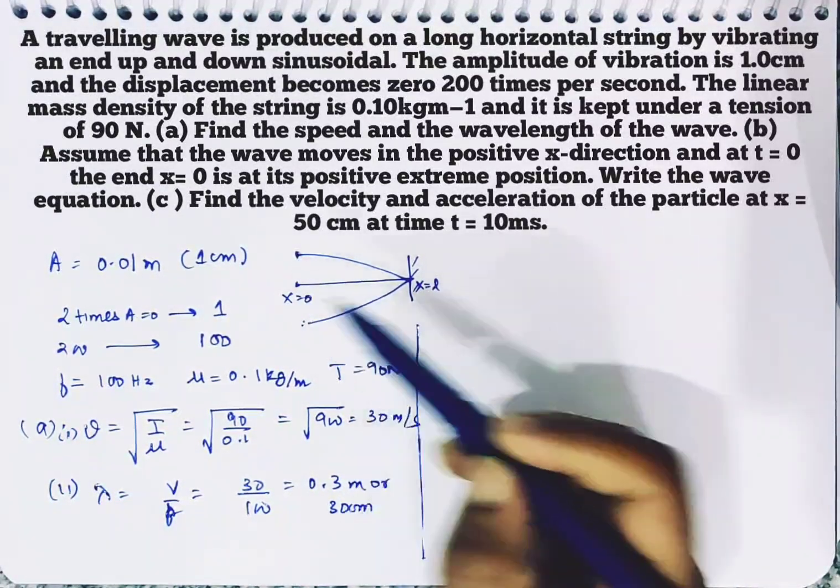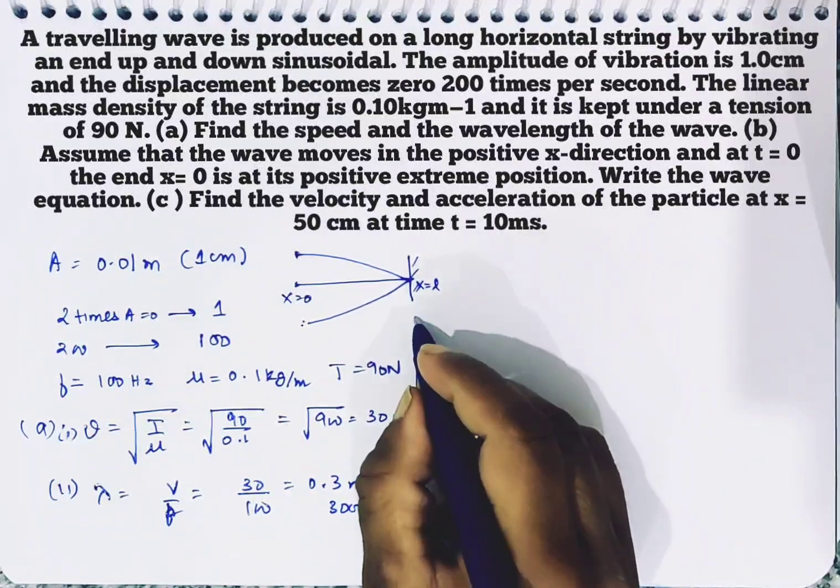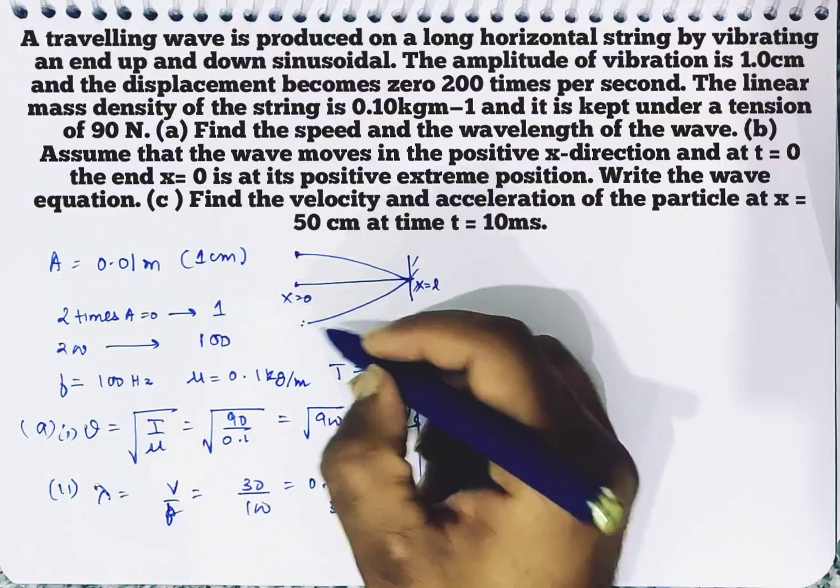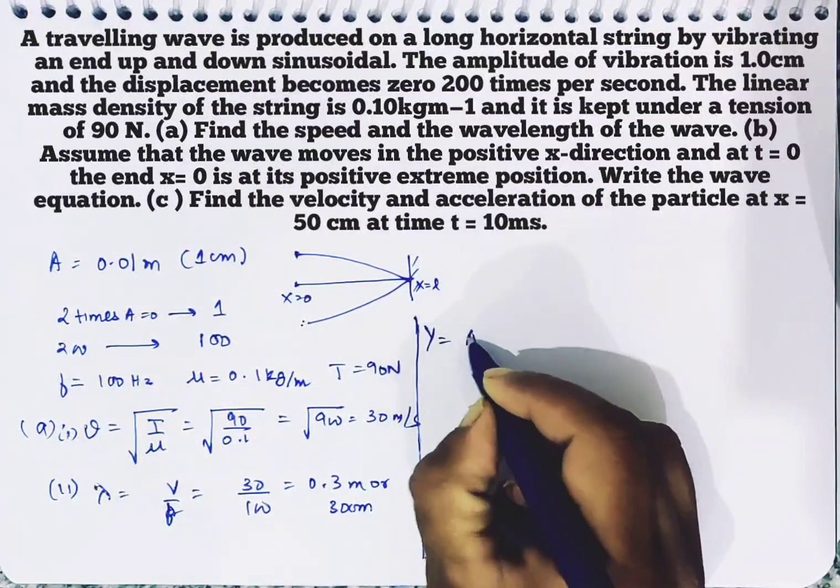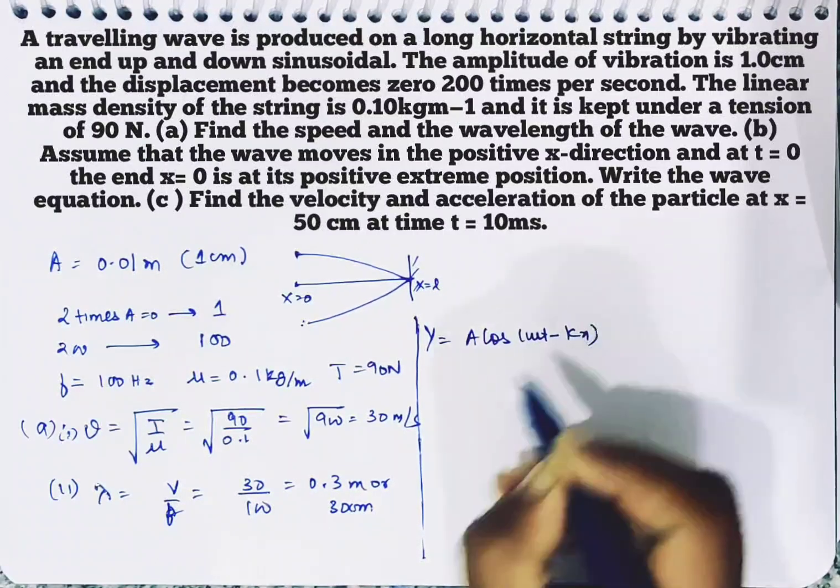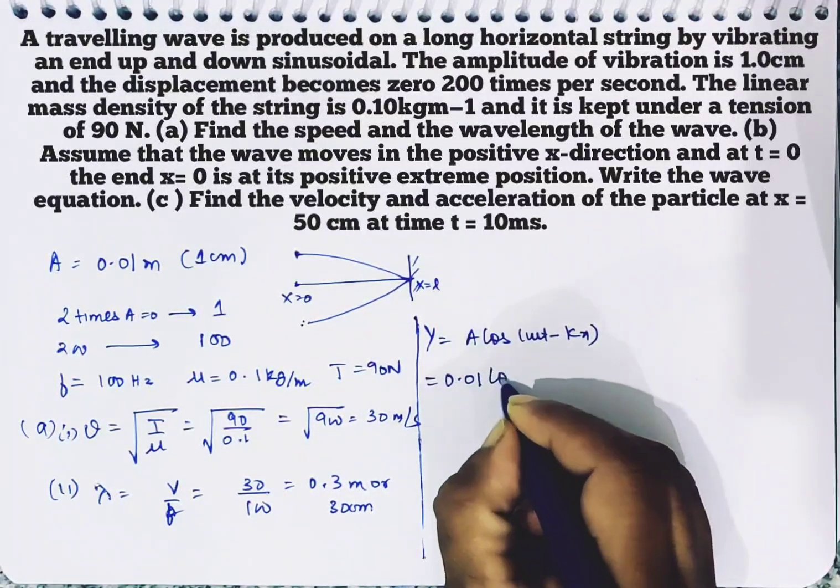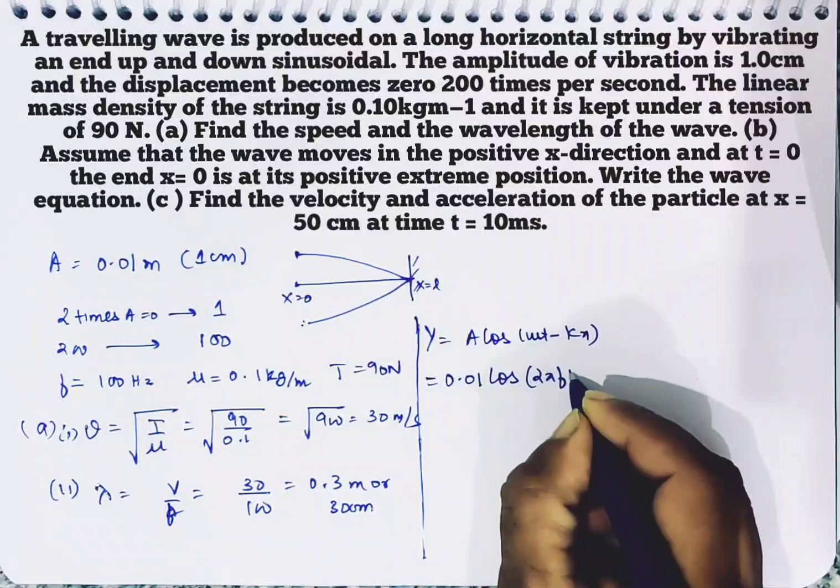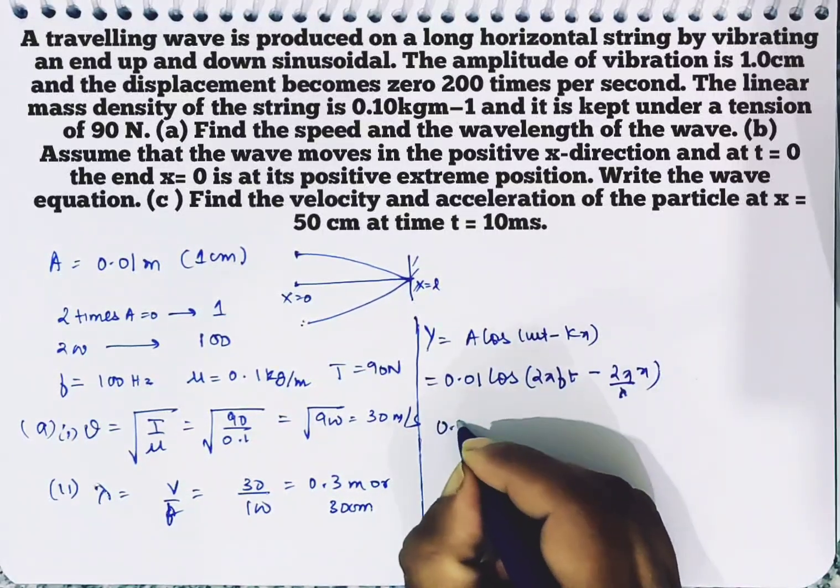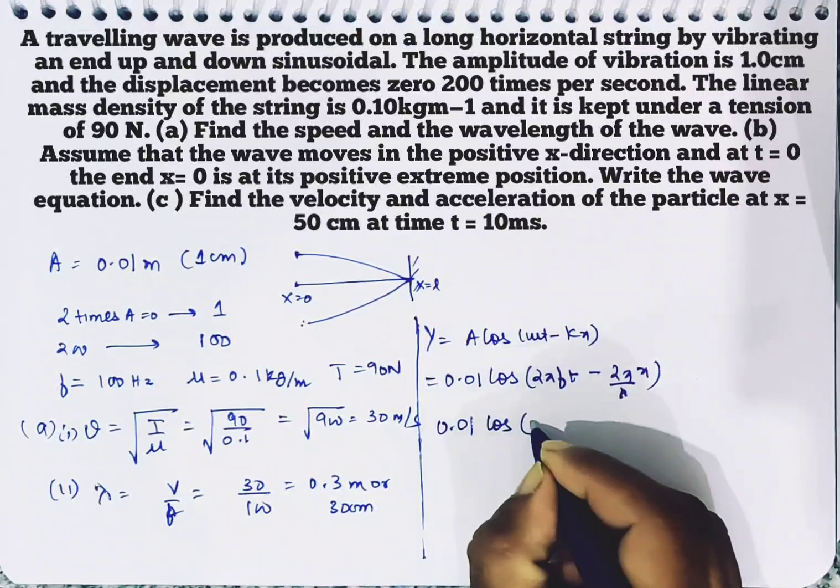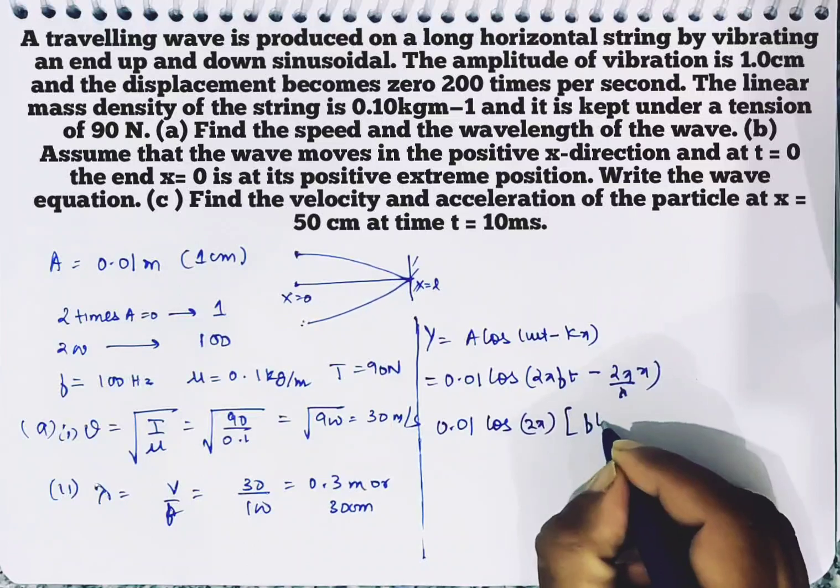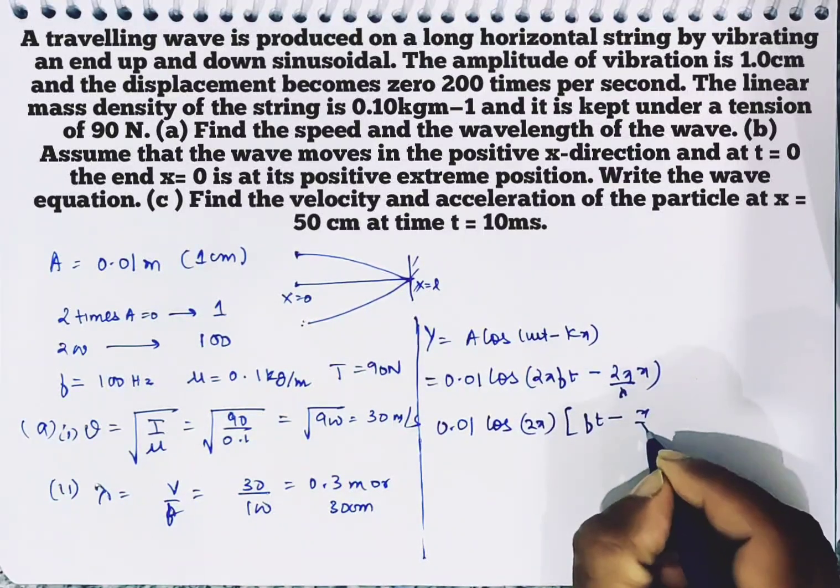Then we have to find the equation. When the end is at extreme position, the cosine equation will be written. So y equals a cos(omega t minus kx). So a is 0.01 cos(2 pi ft minus 2 pi by lambda x). We can take 2 pi as common: cos 2 pi(ft minus x by lambda).